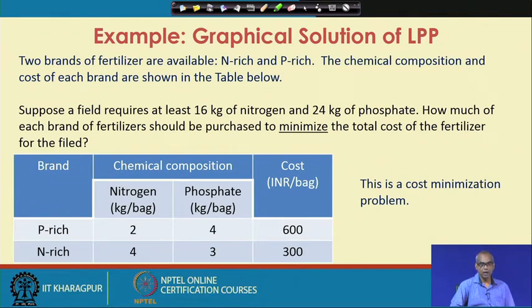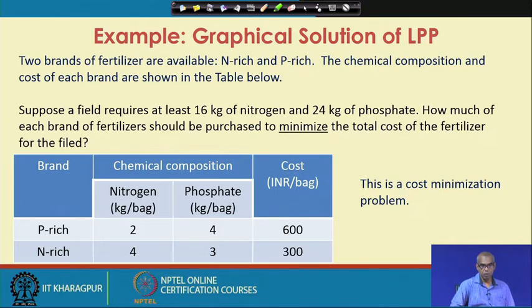Let us take an example. Two brands of fertilizers are available — nitrogen rich and phosphorus rich. The chemical composition and cost of each brand are shown in the table. A field requires at least 16 kg of nitrogen and 24 kg of phosphate. How much of each brand of fertilizer should be purchased to minimize the total cost of the fertilizer for the field?